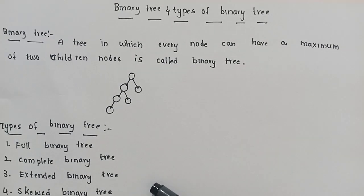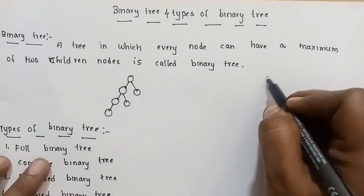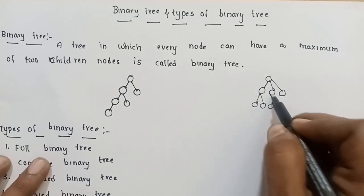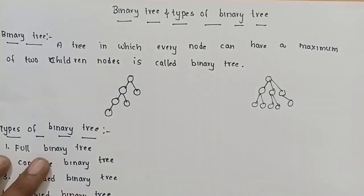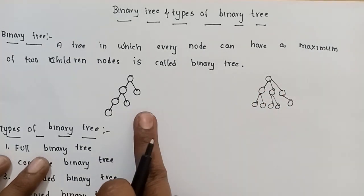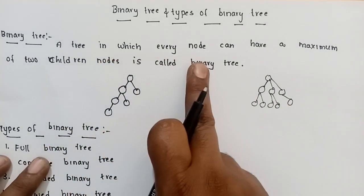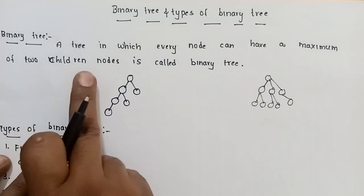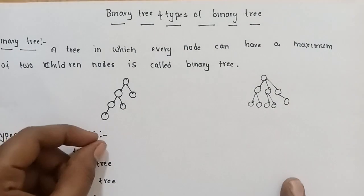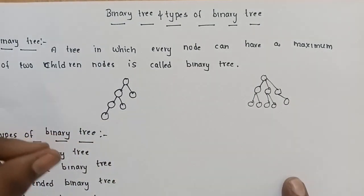So, binary tree: suppose we have a normal tree. We have a root node, and from the root node we have child nodes. The tree in which every node can have a maximum of two children nodes is called a binary tree. If you see a node, it can have a maximum of two children nodes — a left child and a right child.